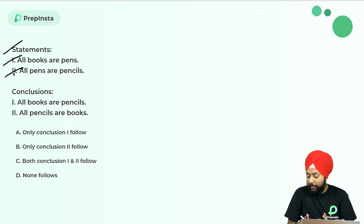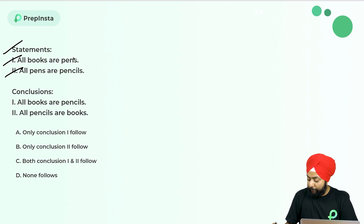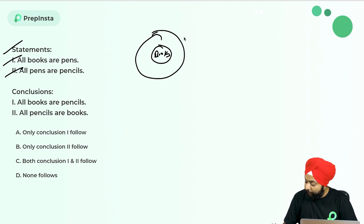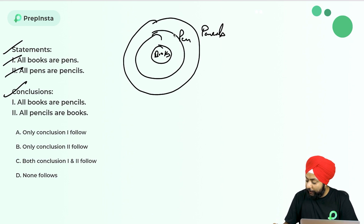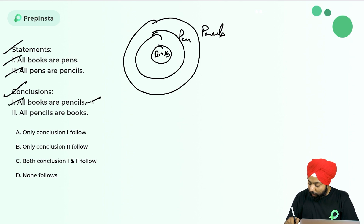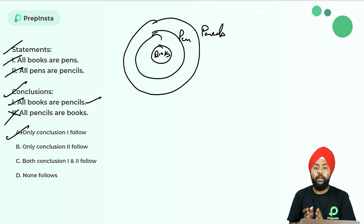All books are pen — so all books fall under the category of pen. All pens are pencils — so all pens come under pencils. Now conclusion one: all books are pencils. Yes, because all books are under pens and all pens are pencils, so all books are also pencils. That is correct. Conclusion two: all pencils are books. Can I say all pencils are books? No, not all. So conclusion two is wrong. Only conclusion one follows — answer is option A.